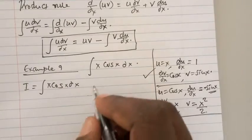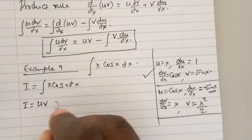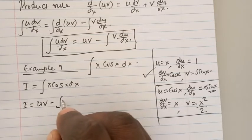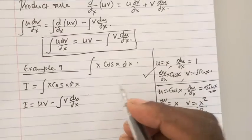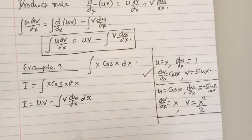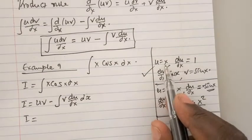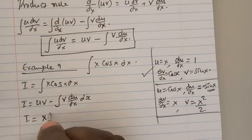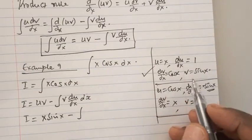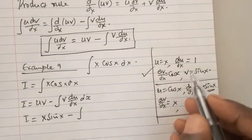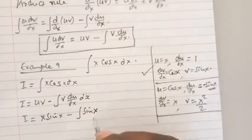The integral is going to be uv minus the integral of v du/dx with respect to x. So the integral is u, which is x, times v, which is sin x, minus the integral of v du/dx, which is 1. The integral becomes x sin x minus the integral of sin x times 1 dx.